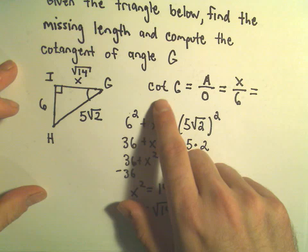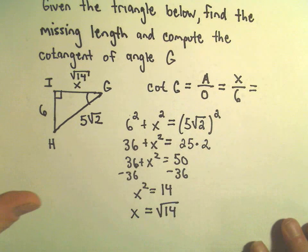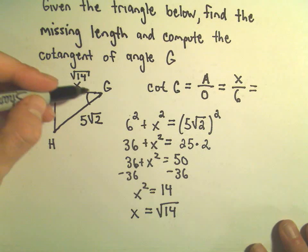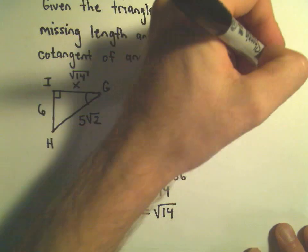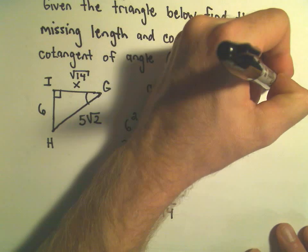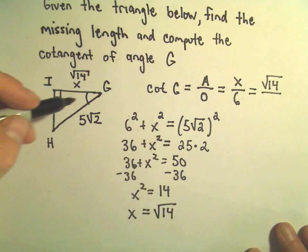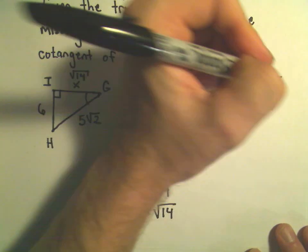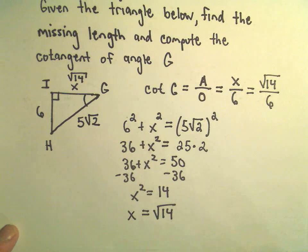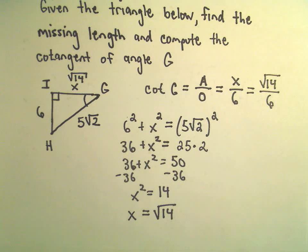It says to figure out cotangent of this angle C, it's going to be the adjacent side. And the adjacent side, we've now figured out, is the square root of 14 over the opposite side, which is 6. And now we've got our answer. We'll see you next time.